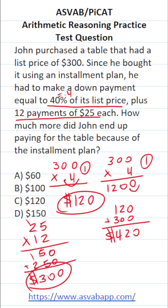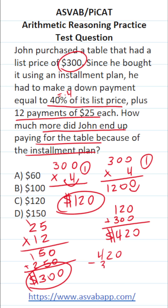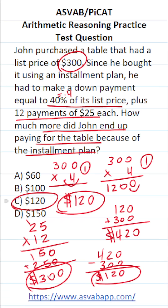The question, however, asks how much more did he end up paying because of the installment plan. That's $420 — the amount he paid using the installment plan — minus the list price of $300. That gives us $120. So he ended up paying $120 more, answer C, because he used the installment plan.